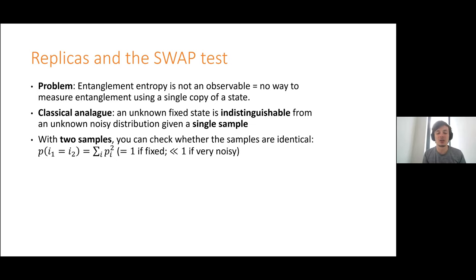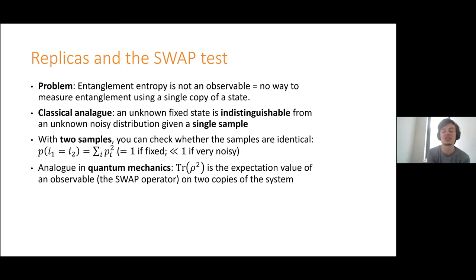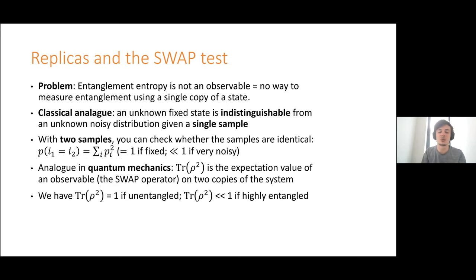But if you have two copies, you could check whether the samples are identical — the probability they are is given by sum over all possibilities of p_i squared, which equals one if it's deterministic but much less than one if it's some very noisy random thing. The quantum analog is: if we take two copies of a quantum state rho, there's an observable that just swaps those two copies — a permutation observable — and its expectation value is just given by the trace of the density matrix squared. That's the analog of sum p_i squared. If it's a pure state, trace rho squared equals one; if it's some highly entangled subsystem, it's much, much less.